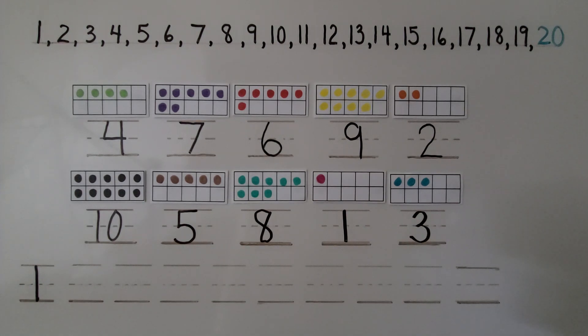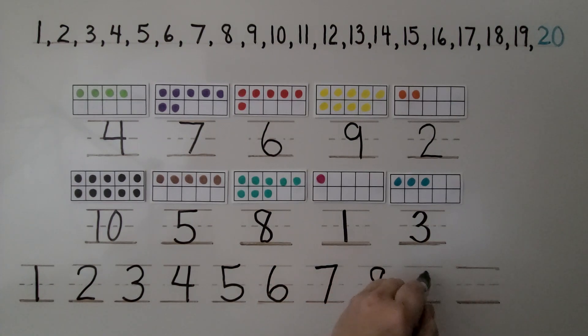Now we need to write the numbers in counting order. 1 is first. Do you know what comes next? If you said 2, you're right. Then 3, then 4, then 5, 6, 7, 8, 9, 10.